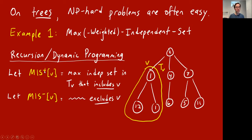The plus stands for including v. And MIS−[v] is going to be the same thing — it's supposed to be the maximum independent set in T_v, the subtree hanging off v, that does not include v.